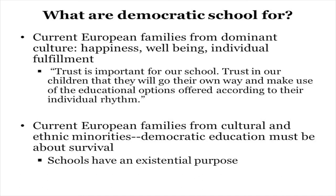What are democratic schools for? One of their goals is happiness, well-being, and the individual fulfillment of children. Trust in children — that they will go their way and make use of educational options according to their individual rhythm — is very individualistic. But current European families from cultural and ethnic minorities see school as being about survival. Schools have an existential purpose for them. Up here it's about being happy; down there it's about staying alive. Democratic school leaders have to realize that if they work with cultural minorities, it's about survival for them, not about being happy.